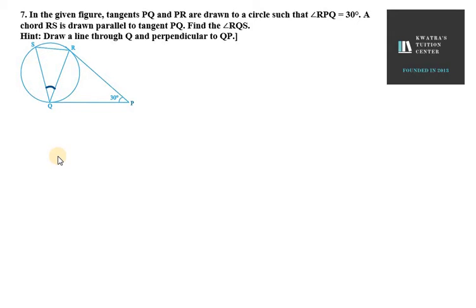First, you can see P is our external point. If P is an external point and PR and PQ are tangents, then they must be equal. So PR equals PQ because they are tangents from external point P. Tangents drawn from one external point are equal.